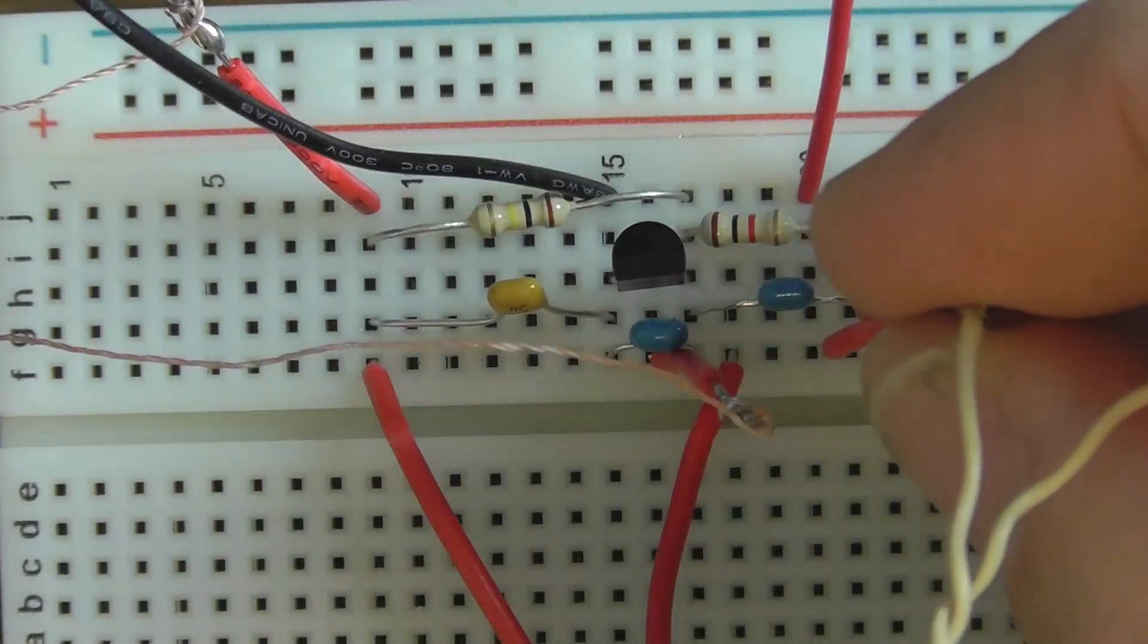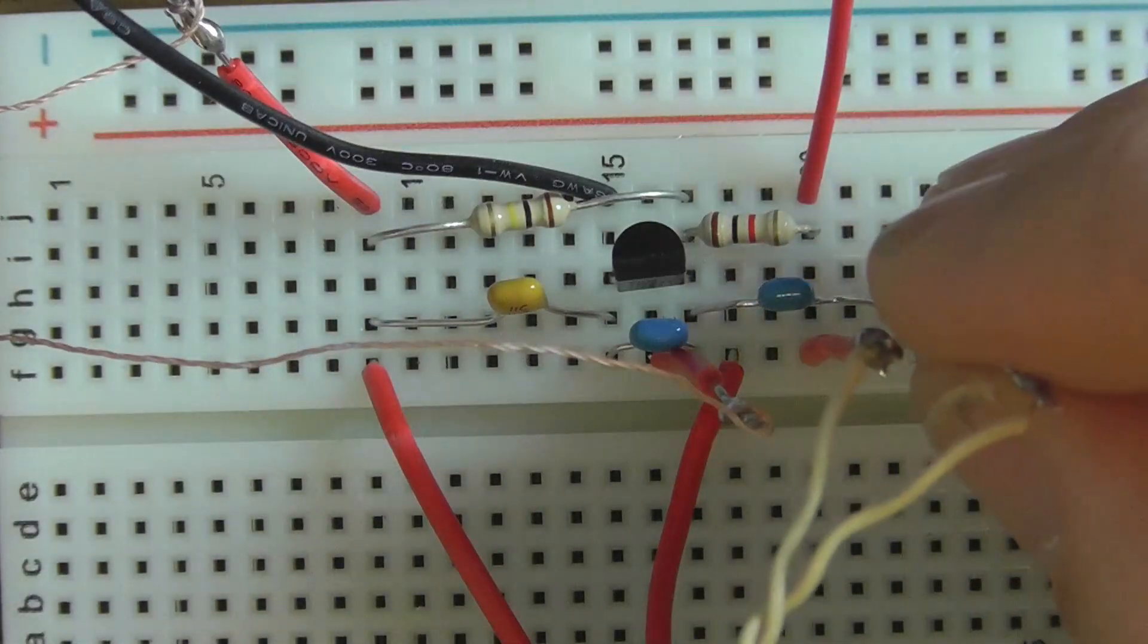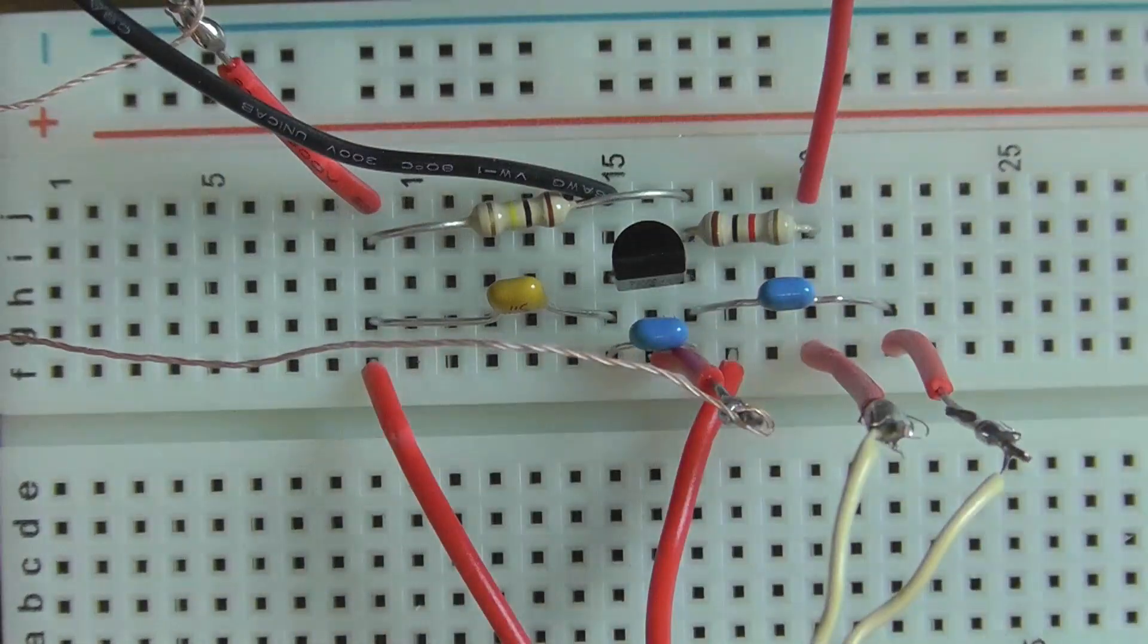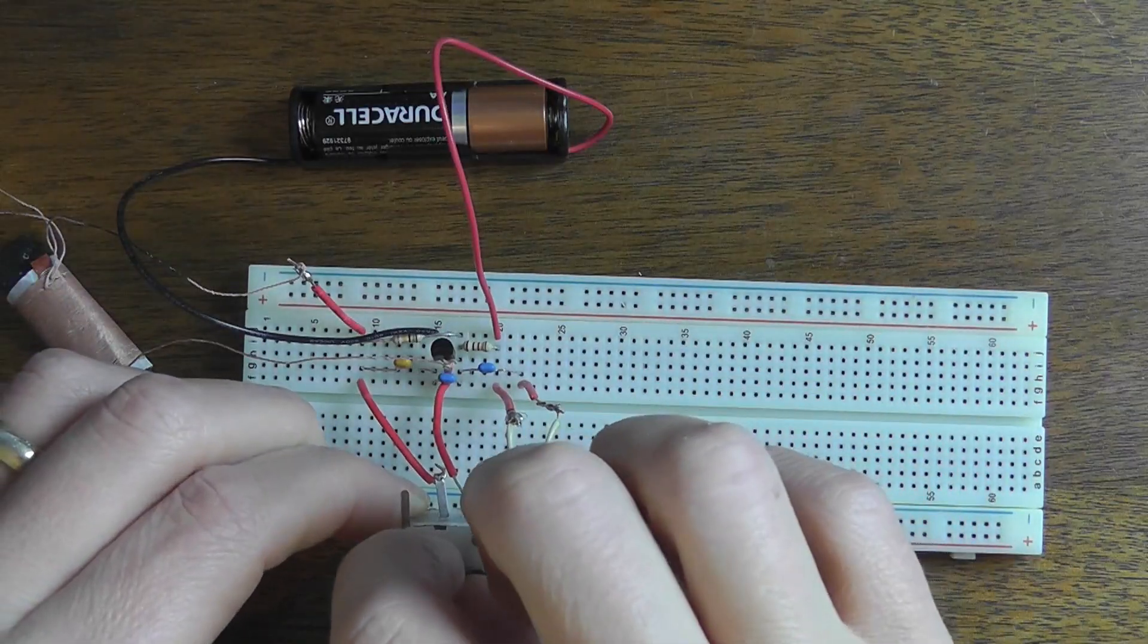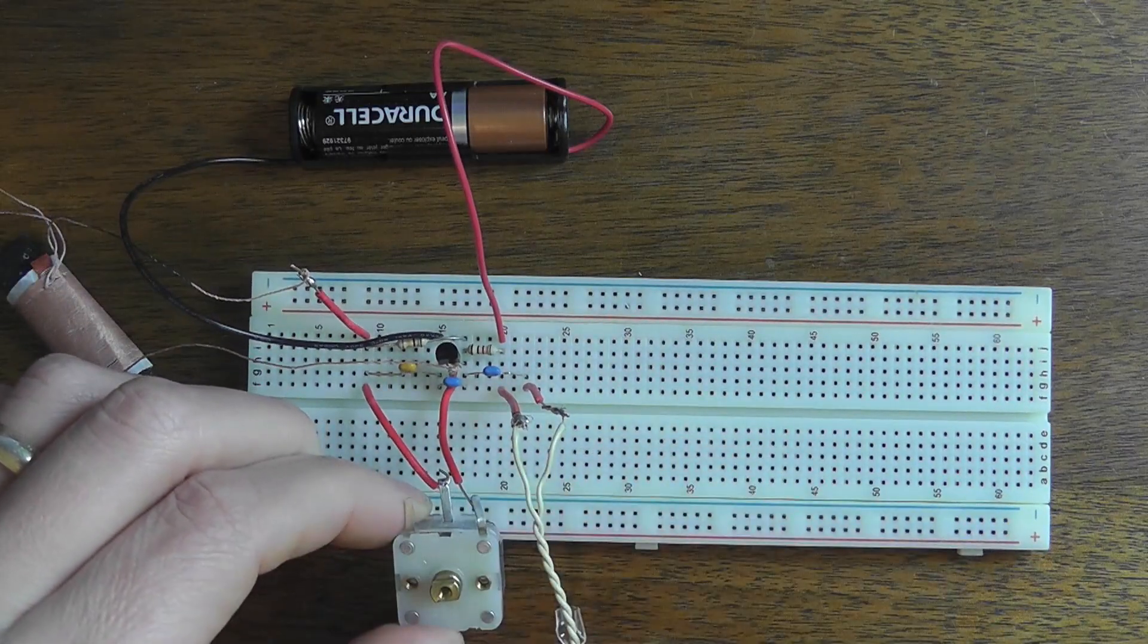And then we have to put in the terminals for the piezo earphone, and they're going to go in F20 as well as F22. And that is the finished radio, and as you can hear here, I am going to be able to tune it to multiple different stations.